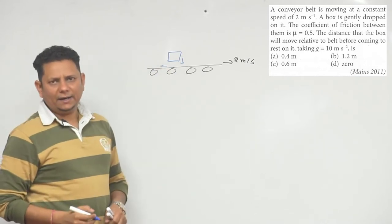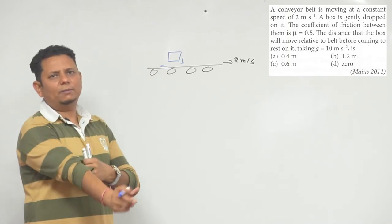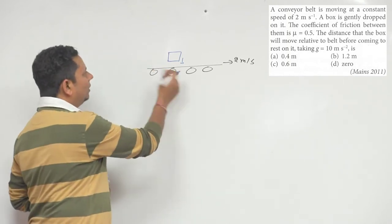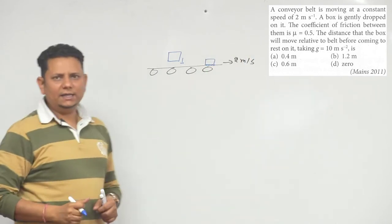There will be a friction force acting backward. And the belt will carry the box forward with it.